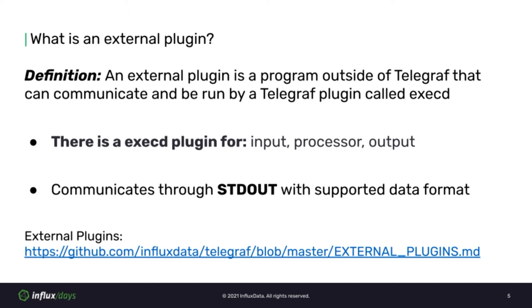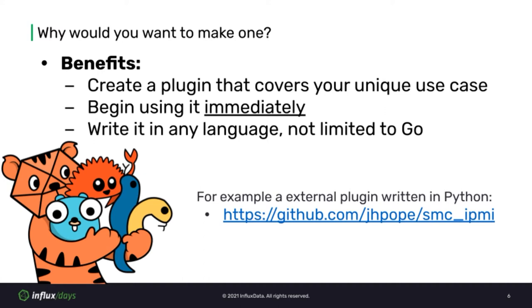There is a markdown file within the Telegraph repository that lists external plugins that have already been created — a great source to get a sense of what people are using them for. While Telegraph offers a ton of plugins covering many different use cases, it doesn't cover everything. For those cases, that is where external plugins really shine. For example, if you want a plugin to gather data from a closed source application only used in your company, then external plugins are the way to go.